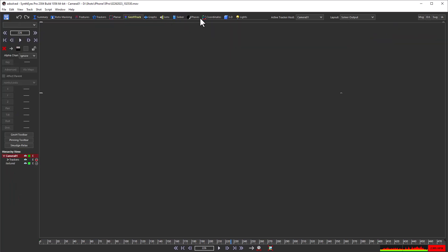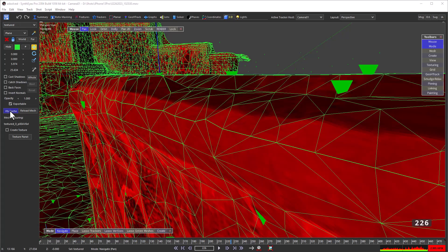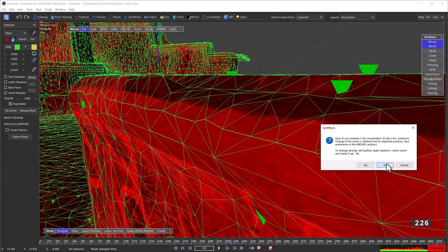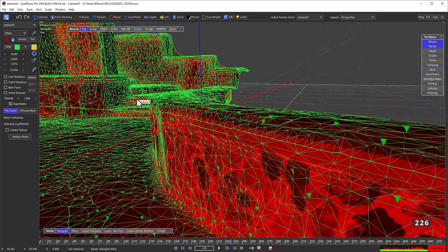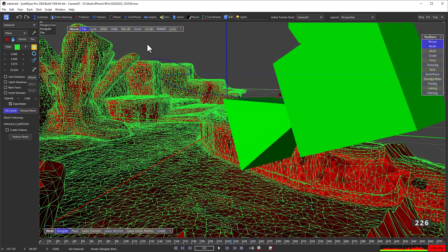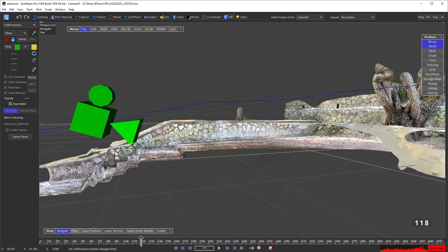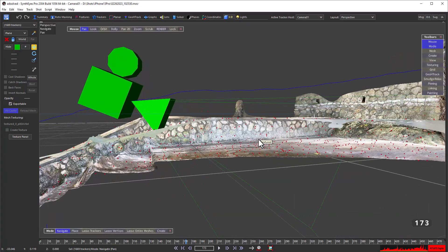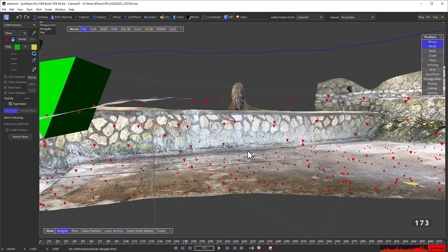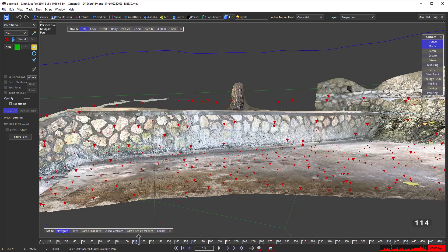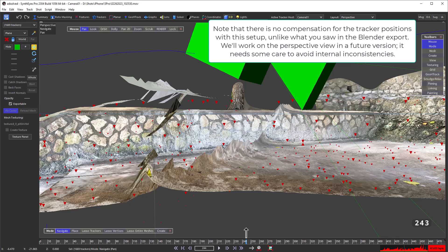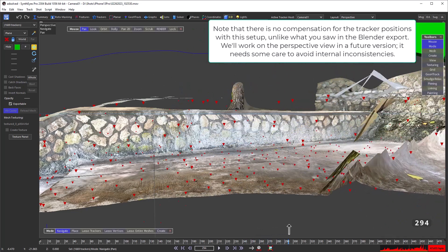I'm loading that vertex cache into SynthEyes, so the stairway will be compensated in the SynthEyes perspective view. We're not displaying back faces, making it easier to see the smaller and smaller shifts at further distances out in front of the camera.